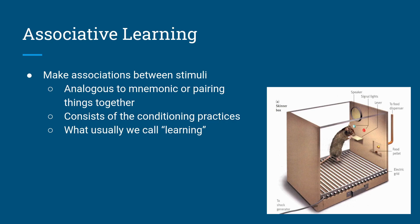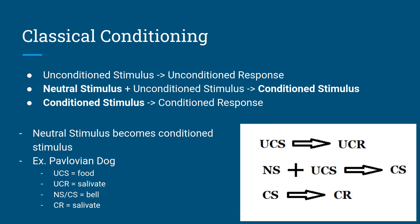Associative learning involves making associations between two or sometimes multiple stimuli. For us, this is analogous to mnemonic devices — if you want to memorize something, you create mnemonics like the famous math one, PEMDAS. Usually associative learning is done through cognitive conditioning, and most of what we usually think of as learning is associative. We're now going to cover specific types, starting with classical conditioning.